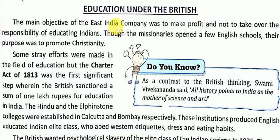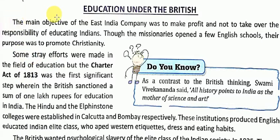What changes were made by the British in India for education, and why did they make those changes — we will discuss in this topic. First, the main objective of the East India Company was to make profit and not to take over the responsibility of educating Indians.